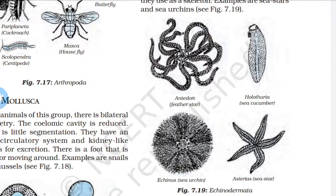Echinoderms are free-living marine animals. They are triploblastic and have a body cavity. They have a hard calcium carbonate structure that they use as a skeleton. Examples include starfish and sea urchins.